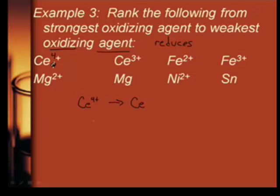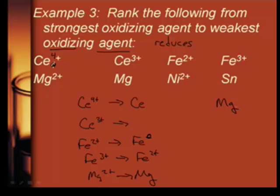So Ce 4 positive can go down to something. So it seems we need to write a bunch of reactions. Ce 3 positive goes to something smaller. Then we can have Fe 2 positive. I can say that's going to go to Fe with no charge. Fe 3 positive can go down to Fe 2 positive. I'm writing all the reactions. Mg 2 positive can go down to Mg. Mg can't go down. Ni 2 positive can go to Ni. And tin can't go down.